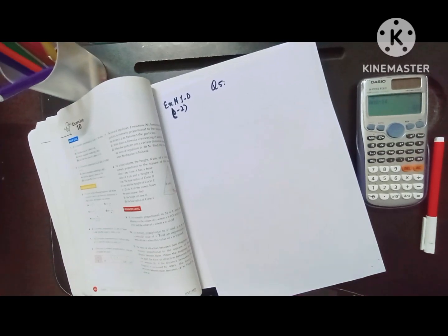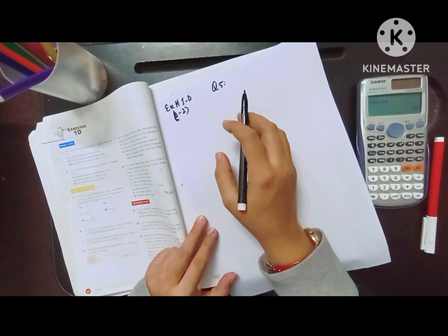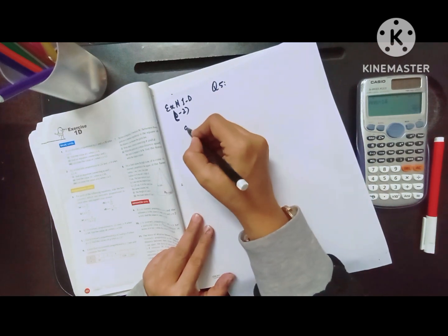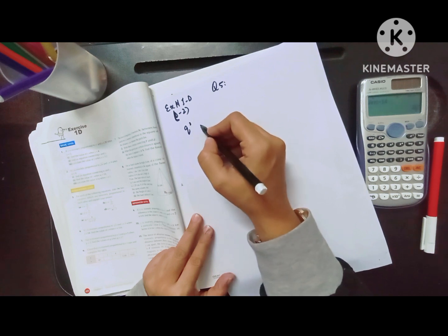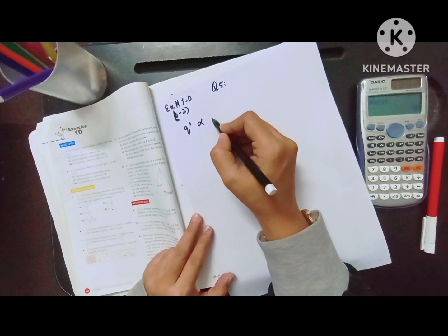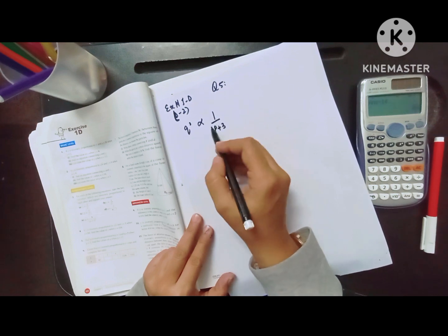Assalamu alaikum students. We are doing question number 5 of exercise 1d from d2. The question is saying if q² is inversely proportional to p plus 3.